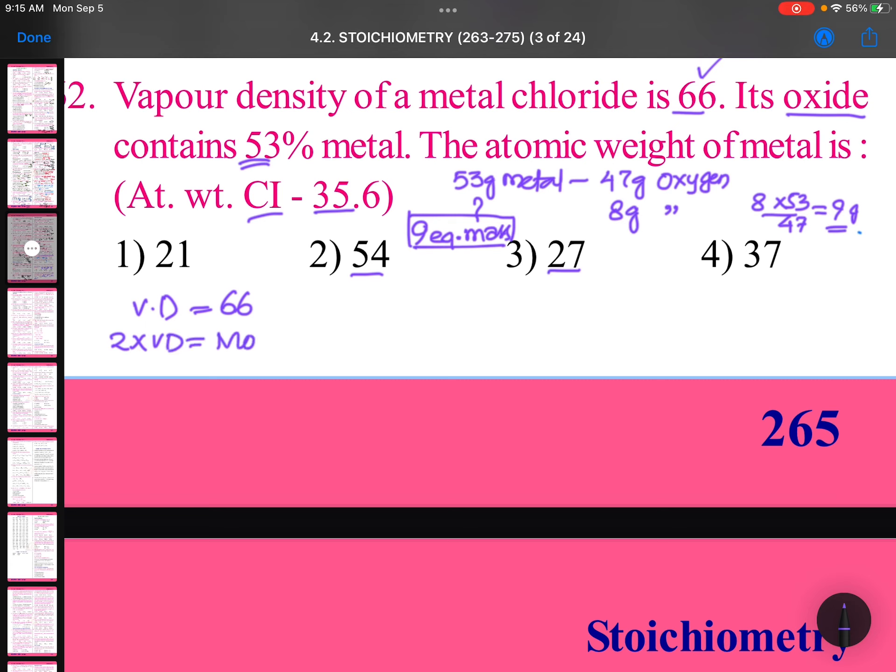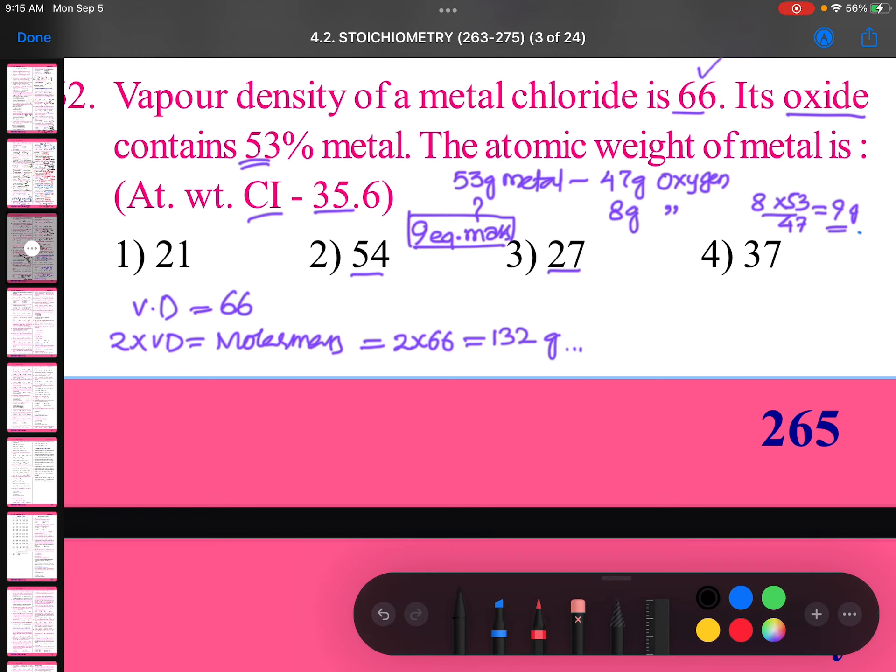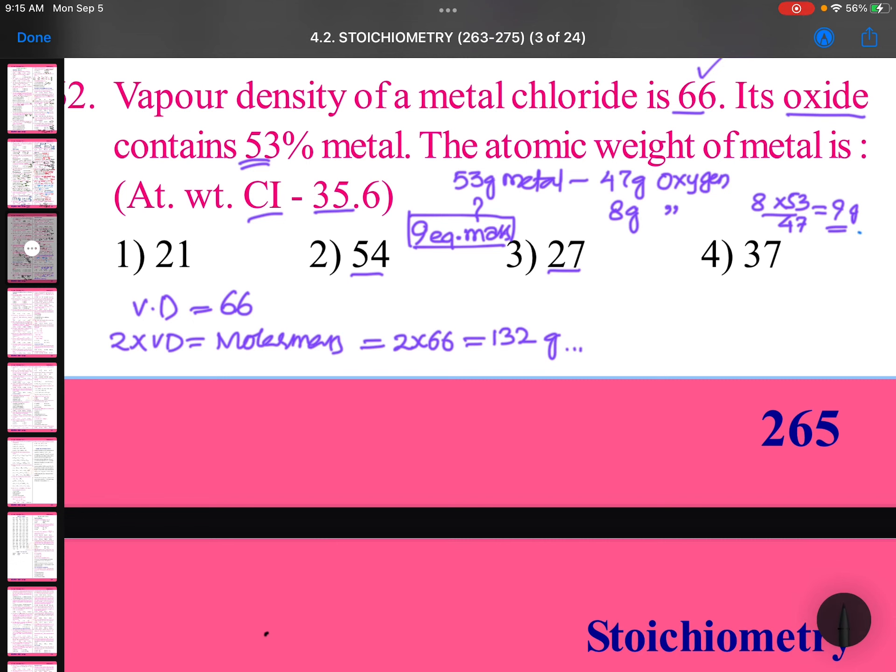So this will become 132 grams. 132 grams is the molar mass. Coming to the point now, atomic mass of chlorine is given 35.6.